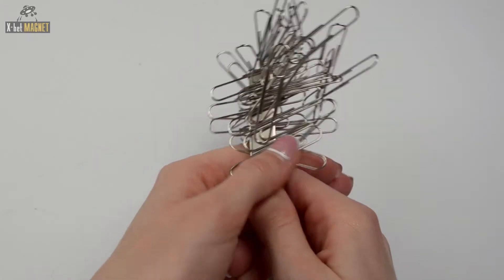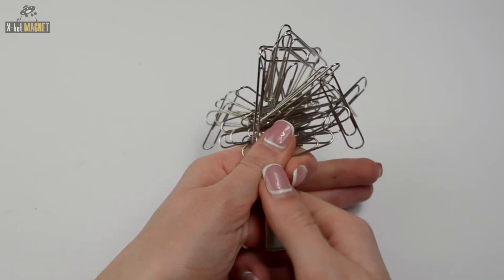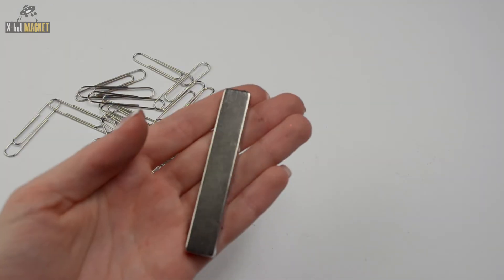They will not lose their magnetization around other magnets or if they are dropped. In addition, they are triple layer coated for maximum durability and protection against corrosion.